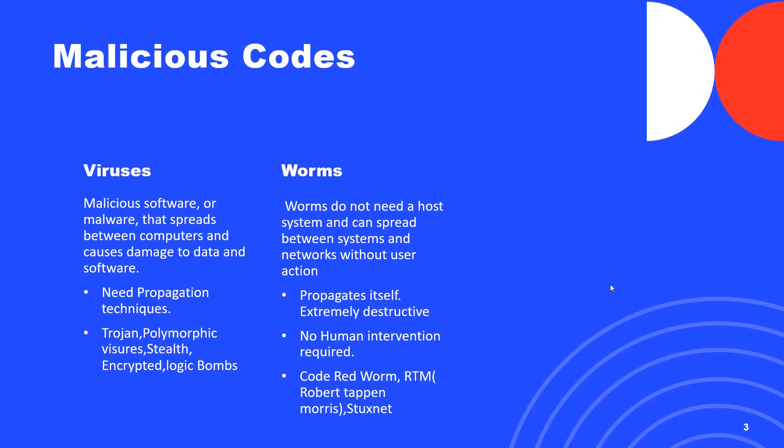Viruses are primarily subclassified into trojans, polymorphic viruses, stealth, encrypted, and logic bombs. A trojan horse disguises itself as useful or genuine software, with the virus hidden inside that software to infect the host.